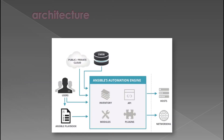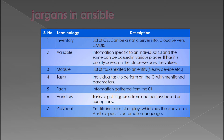Here is a very simple architecture image taken from the official Ansible documentation. The core automation engine has inventory, APIs, modules, and plugins. The input sources can be a CMDB or private/public clouds like AWS or Azure. The engine can also be fed with Ansible playbooks, and the user can trigger the engine directly. The engine then works on hosts or networking devices.